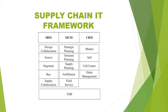As we have discussed, this is the Supply Chain IT Framework, where there are three macro processes: SRM, ISCM, and CRM. For each macro process, there are micro processes — for SRM: design collaboration, source, negotiate, buy, and supply collaboration; for ISCM: strategic planning, demand planning, supply planning, fulfillment, and field service; and for CRM: market, sell, call center, and order management. All three macro processes rest on the TMF, Transaction Management Foundation. This is the Supply Chain IT Framework. Thank you.